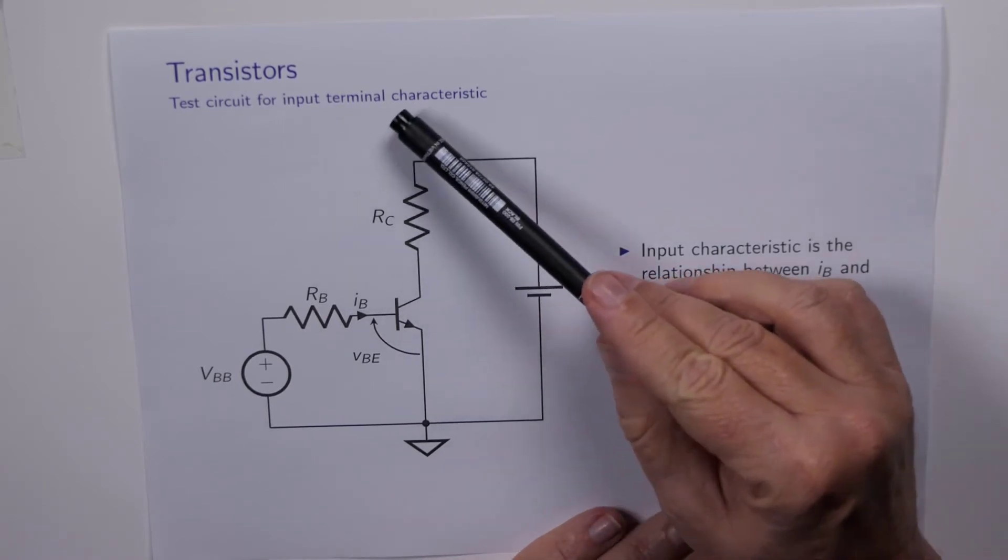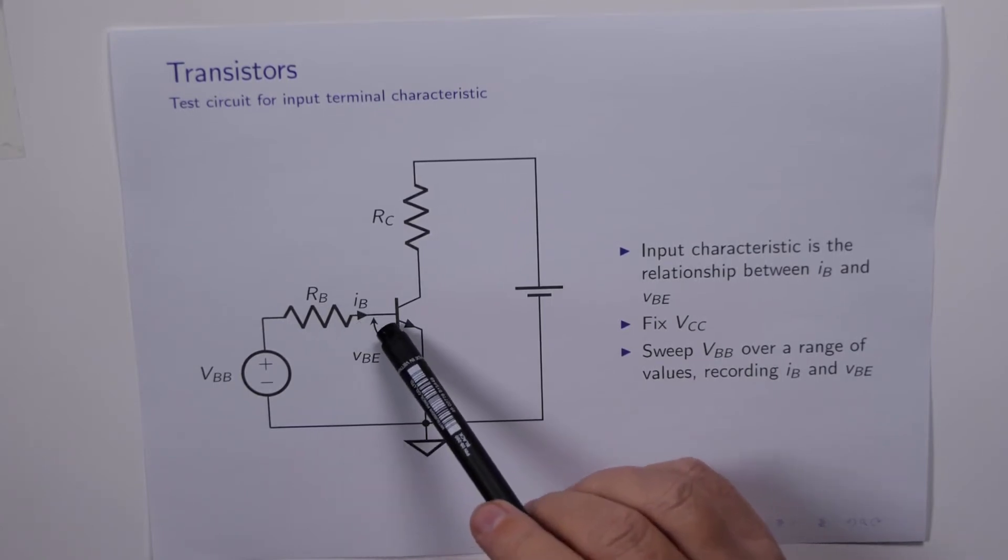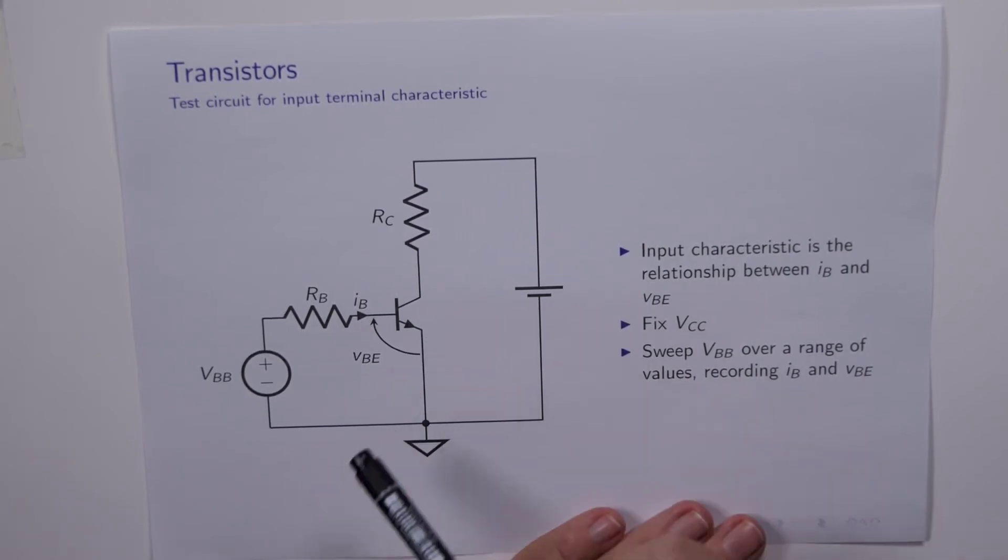In the collector circuit, the collector terminal is connected via this resistor RC to this fixed voltage source here, and what we call the input terminal characteristic is a graph of the base current versus the base emitter voltage. So from now on we will be associating the base and the emitter with the input to the transistor, and so that's why we call it the input terminal characteristic.